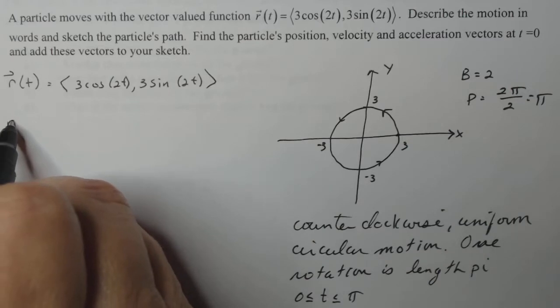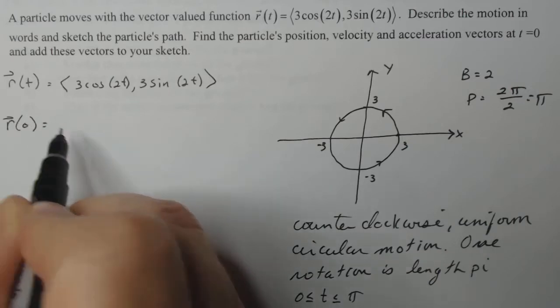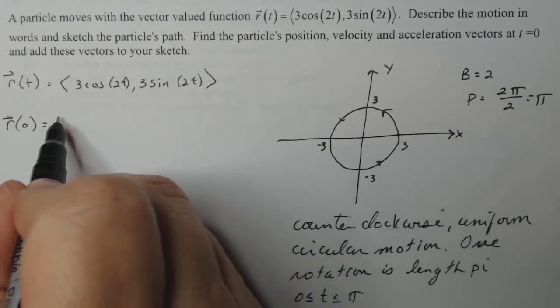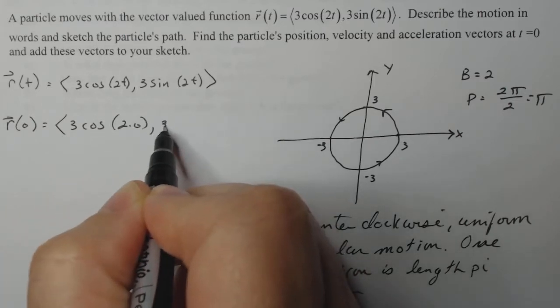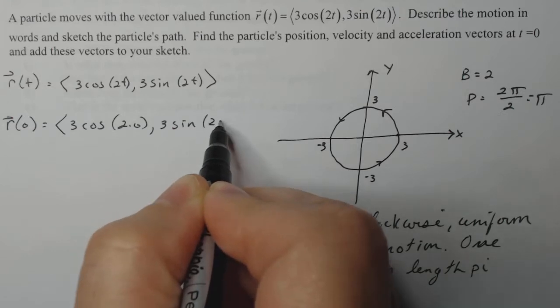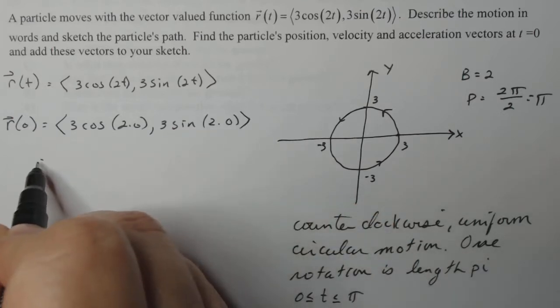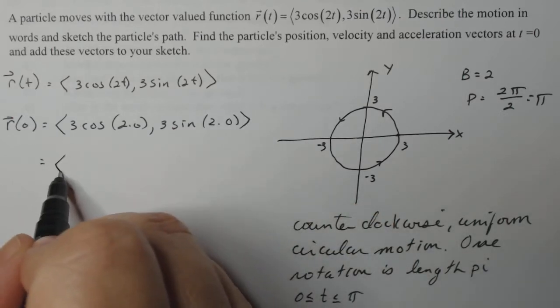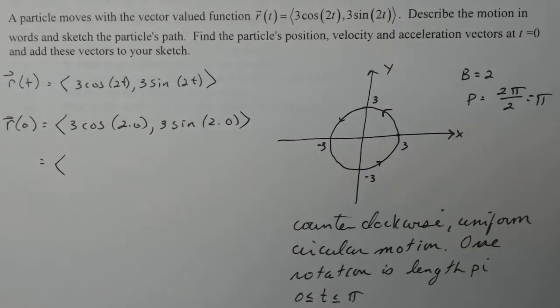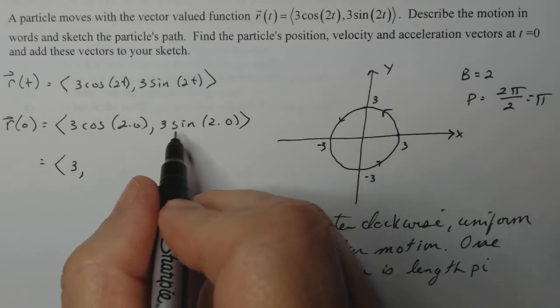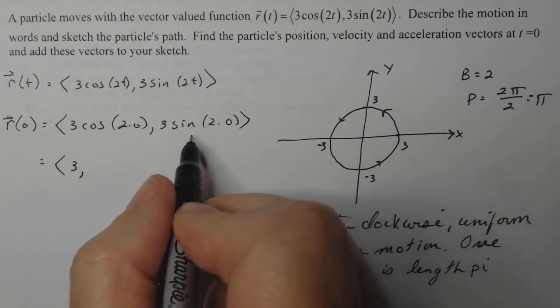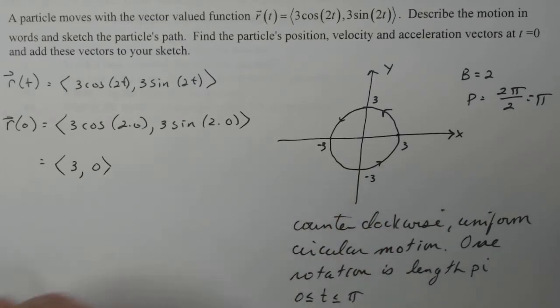But the problem says I need to find the position vector at zero. So that's going to be 3 cosine 2 times zero comma 3 sine of 2 times zero. So this gives me 3 cosine of zero, which is one, so this should be three. And three sine zero is zero. So that's my position vector at <3, 0>.